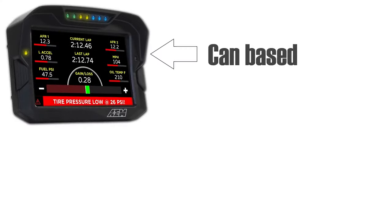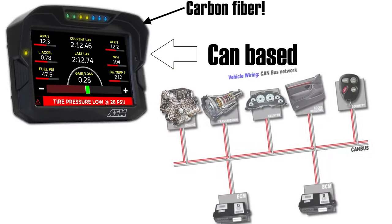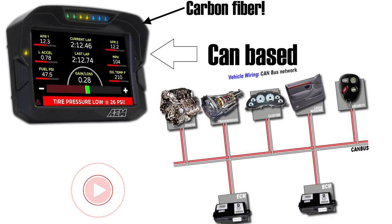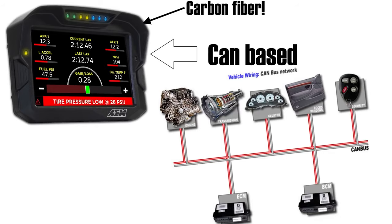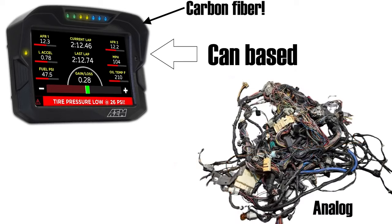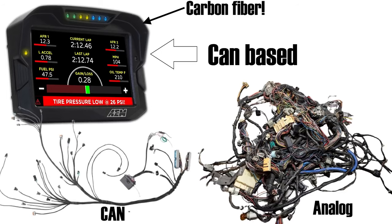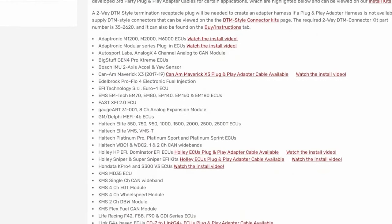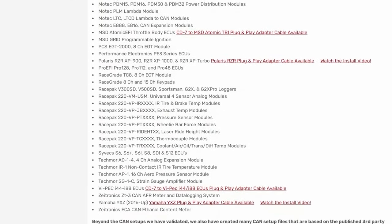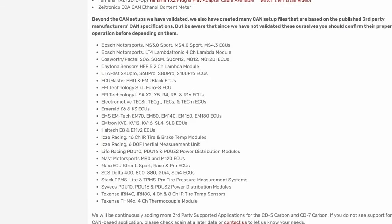This dash is entirely CAN based. CAN bus enables dramatically reduced wiring and dramatically improved efficiency of communication between different devices and ECUs within a vehicle. Instead of running a wire from everything to everything, all the devices and ECUs can communicate through a very minimal wiring harness. Because it's CAN based, this dash works with a bunch of third-party devices — AEM keeps a constantly expanding list on their website, and it's extremely extensive.